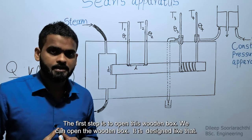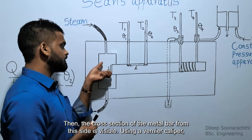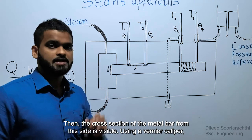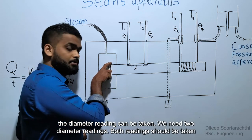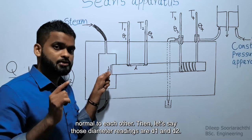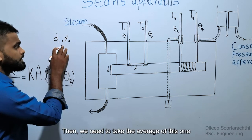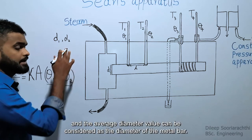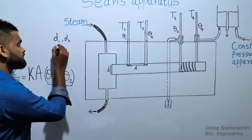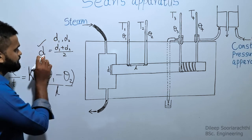The first step is to open the wooden box. You can open it — it is designed that way. The cross-section of the metal bar from this side will be visible. Using a vernier caliper, the diameter readings can be taken. We need two diameter readings, and both readings should be taken perpendicular to each other. Let's say those diameter readings are D1 and D2, and we take the average of those two values to get the average diameter of the metal bar.